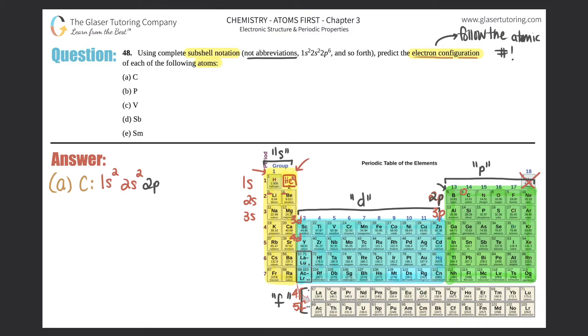Now you're at number 5, which is 2p. How many electrons do you still need to collect? You only need two more to reach carbon (atomic number 6), so this is 2p2. That's the complete electron configuration for carbon: 1s2 2s2 2p2.